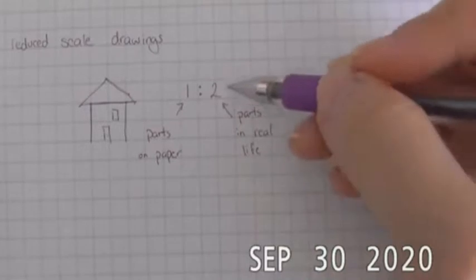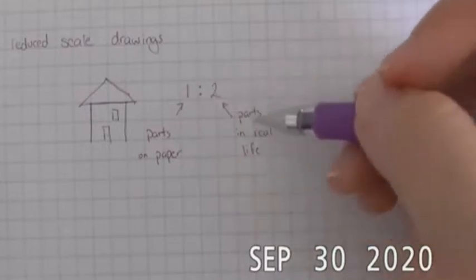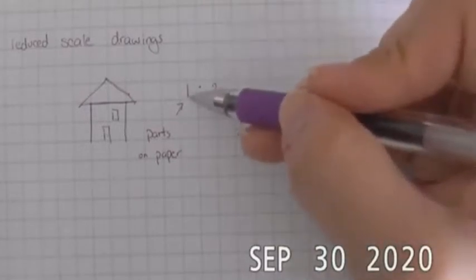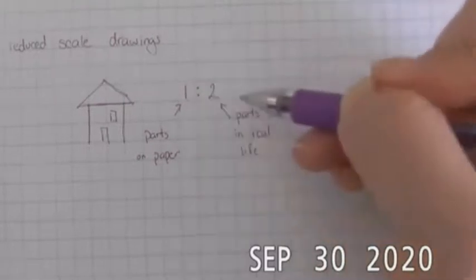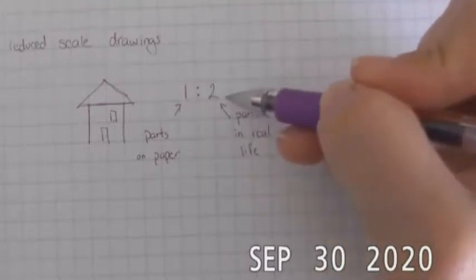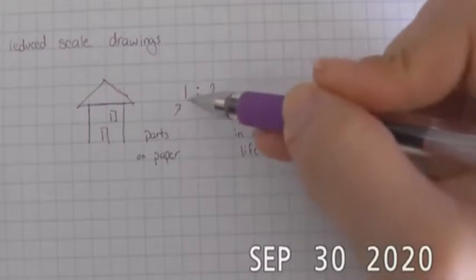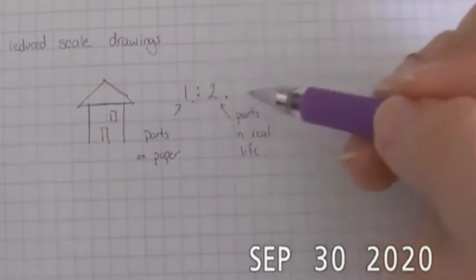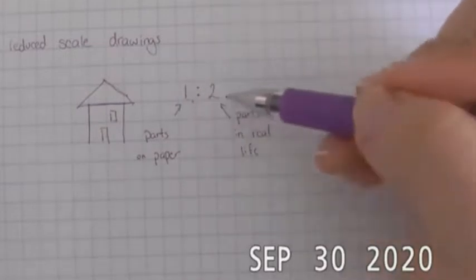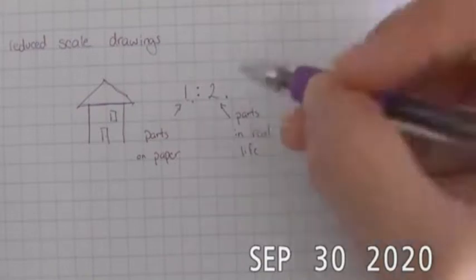So for this particular reduced scale, this one to two scale, it could tell us that one inch on paper represents two feet in real life. So if we were drawing a house that was 15 feet long, on paper we would represent that as 7.5 inches. Now just because that particular example is inches to feet, doesn't mean it's always going to be that way.